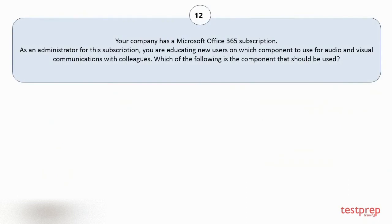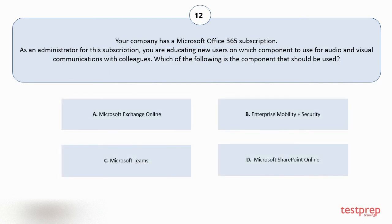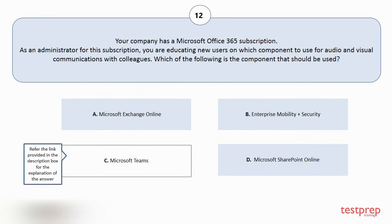Question number twelve. Your company has a Microsoft Office 365 subscription. As an administrator for this subscription, you are educating new users on which component to use for audio and visual communications with colleagues. Which of the following is the component that should be used? Your options are: A. Microsoft Exchange Online. B. Enterprise Mobility Plus Security. C. Microsoft Teams. D. Microsoft SharePoint Online. The correct answer is option C.